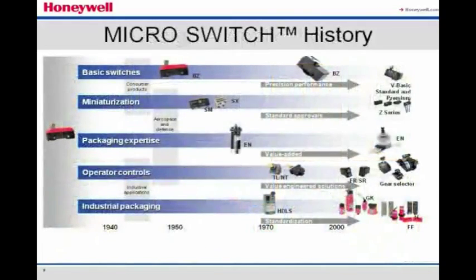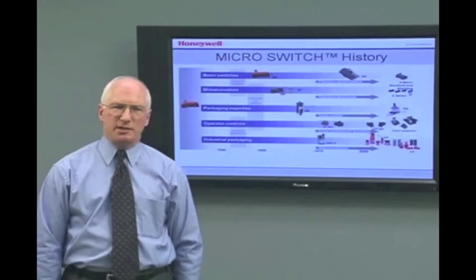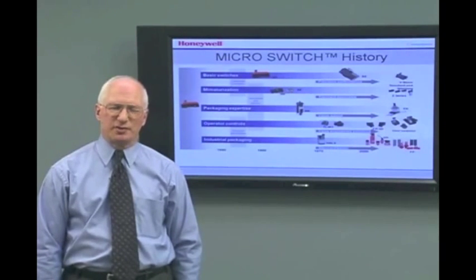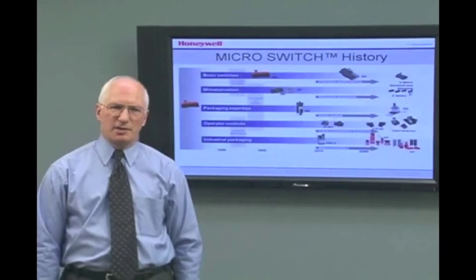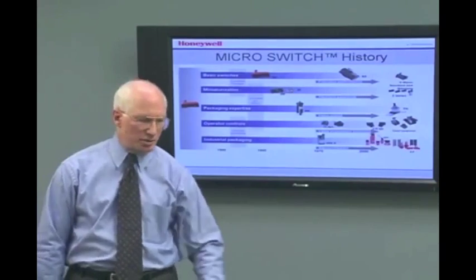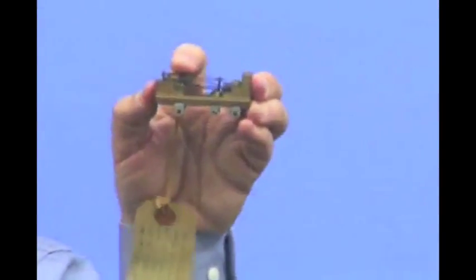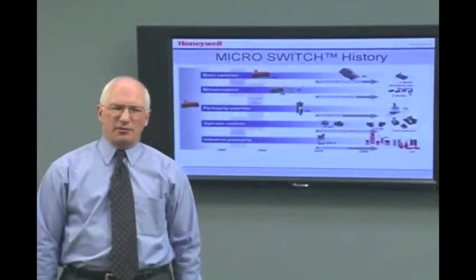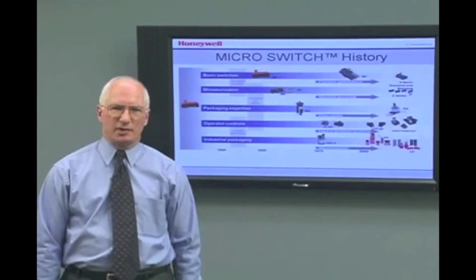Now let's go back 75 years and talk about the history of microswitch technology. In 1932, Dr. Charles Burgess of Burgess Laboratories assigned one of his mechanics, Peter Magall, to develop a switch to control the temperature of a chicken brooder. This led to the development of the first microswitch precision snap action basic switch, which was quickly adapted for other applications. In 1937, the electronics division of the company was spun off and became the microswitch corporation.